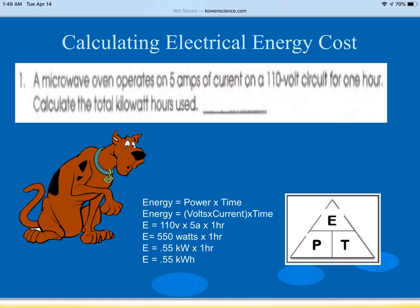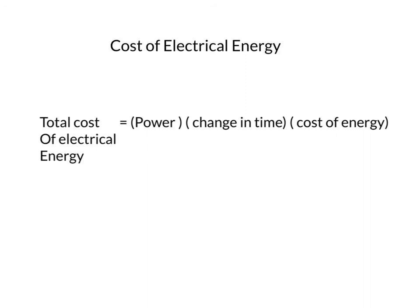A microwave oven operates on 5 amps on a 110-volt circuit for one hour. Energy equals voltage times current times time: 110 volts times 5 amps times 1 hour. Convert watts to kilowatts to get the total kilowatt hours used. The cost formula is: total cost equals power in kilowatts times change in time in hours times the cost per kilowatt hour. If power is given in watts, convert first — one kilowatt equals 1000 watts.